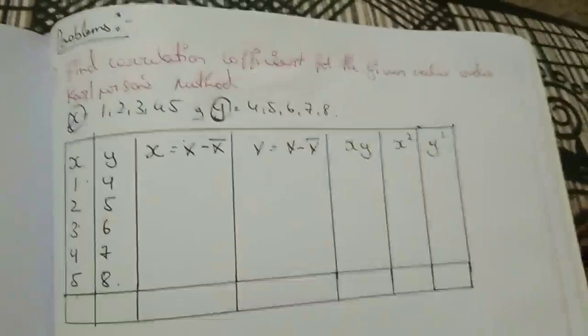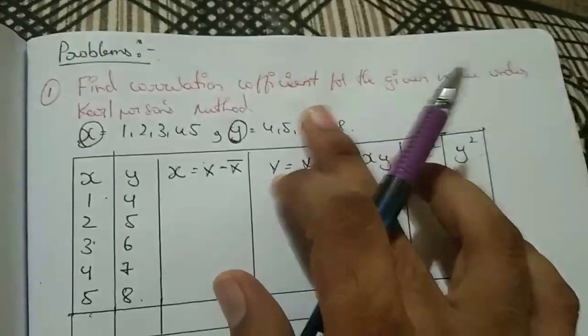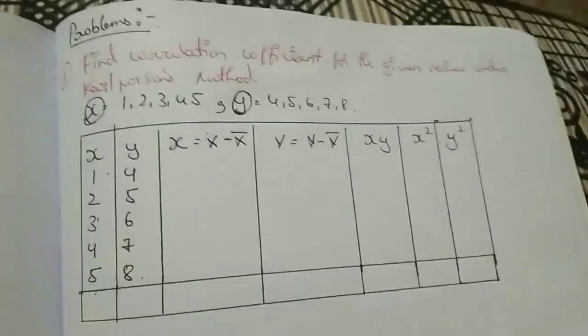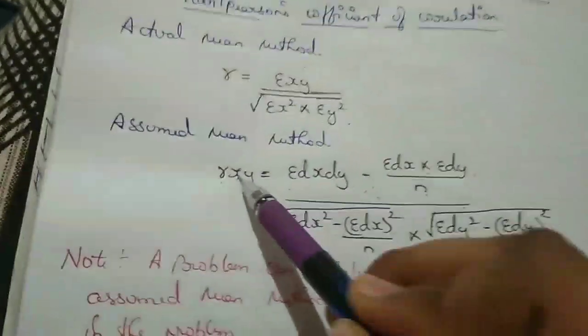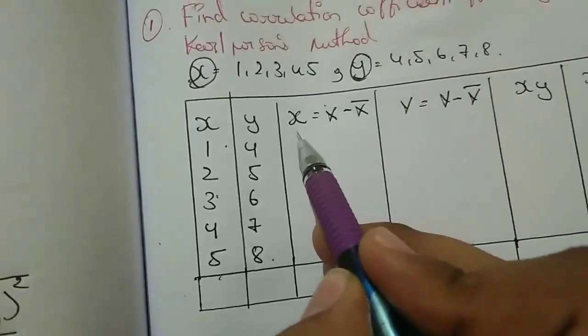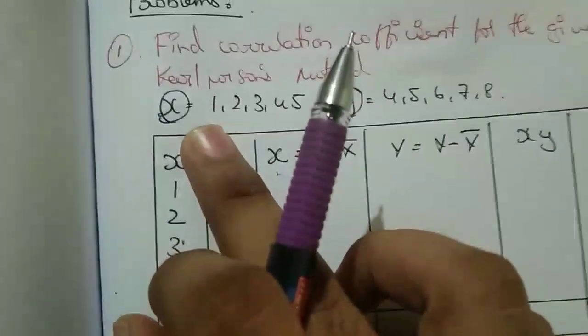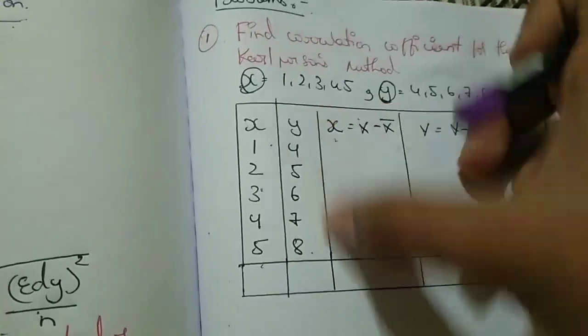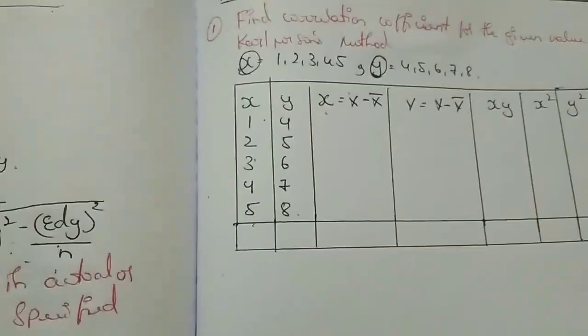Let's begin with the sum. Find the correlation coefficient for the given values under Carl Pearson's method. They have not mentioned which method to use, so you can do either. I will try the actual mean method first. The question gives: x = 1, 2, 3, 4, 5 and y = 4, 5, 6, 7, 8. Now you have to total them up — sigma x gives 15 and sigma y gives 30.